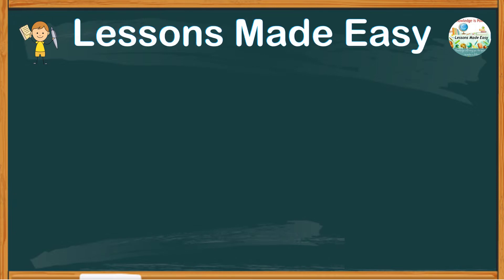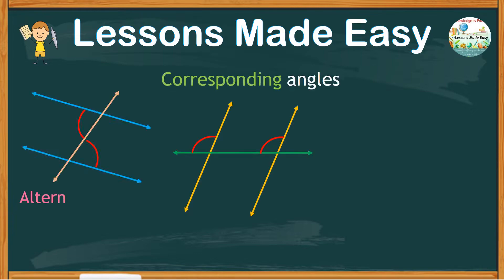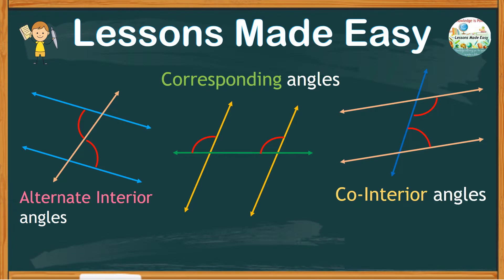In our previous lesson, we talked about corresponding angles, alternate interior angles, and co-interior angles. These are the types of angles formed by parallel lines and a transversal.